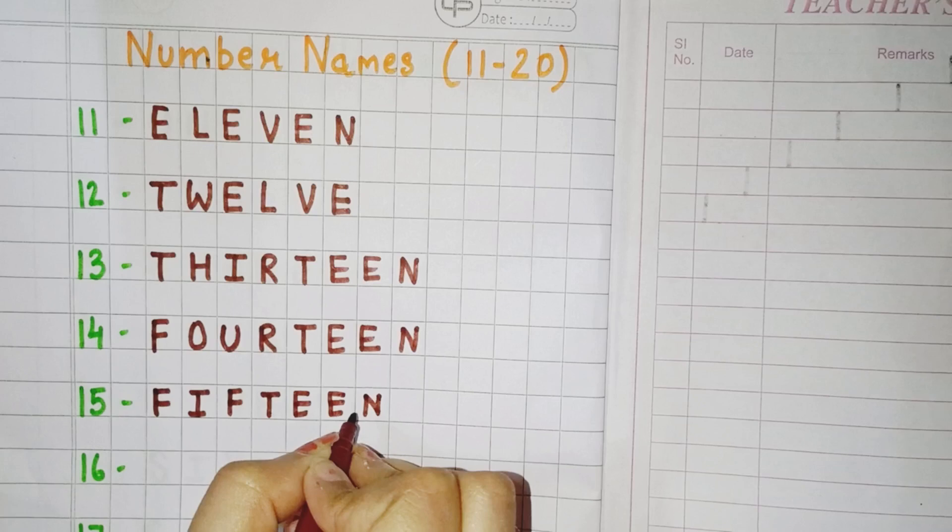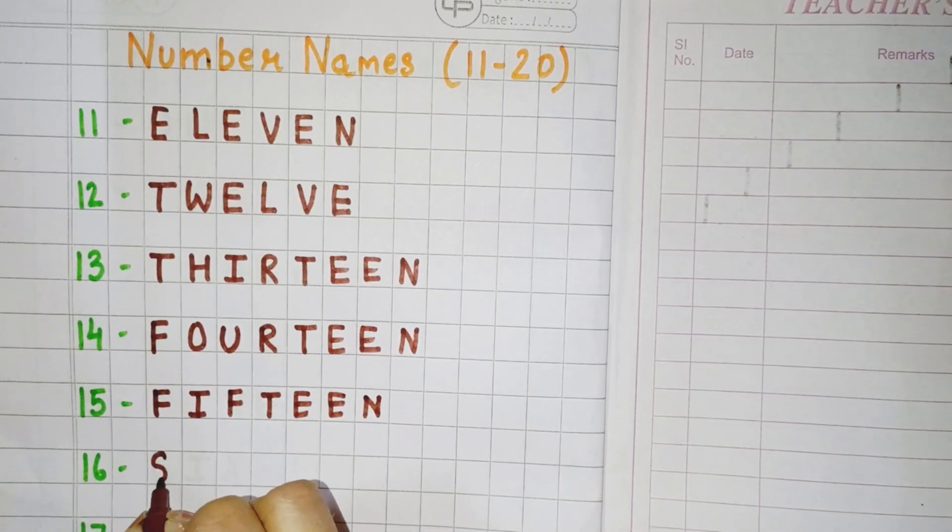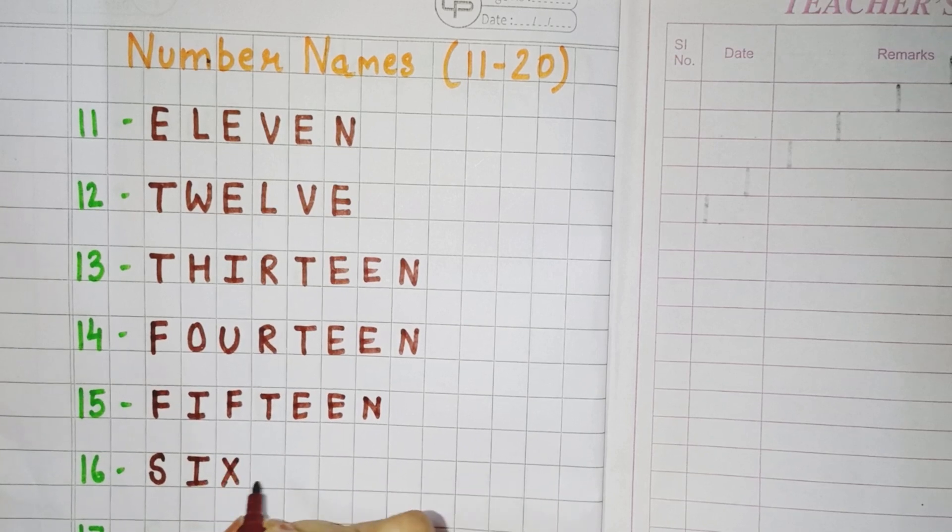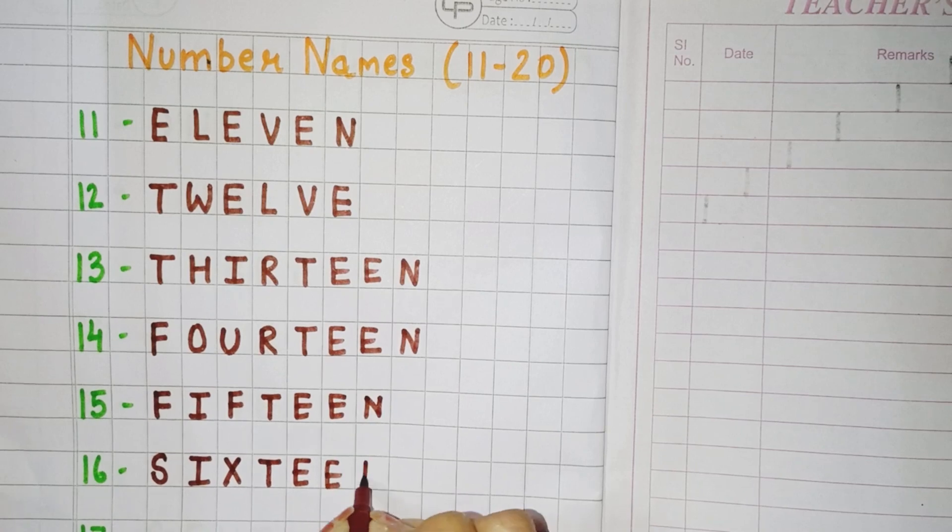Now next is 16. So you have to write S, I, X, T, double E, N. Sixteen.